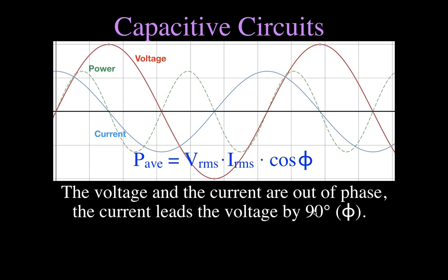The phase angle is 90 degrees. If you remember what the cosine of 90 degrees is — you can recall the cosine curve or calculate it on your calculator — the cosine of 90 degrees is zero. So when we calculate the average power for a capacitive circuit, we take RMS voltage times RMS current times cosine of 90 degrees, which is zero. That means the average power consumed in a purely capacitive circuit is zero watts.